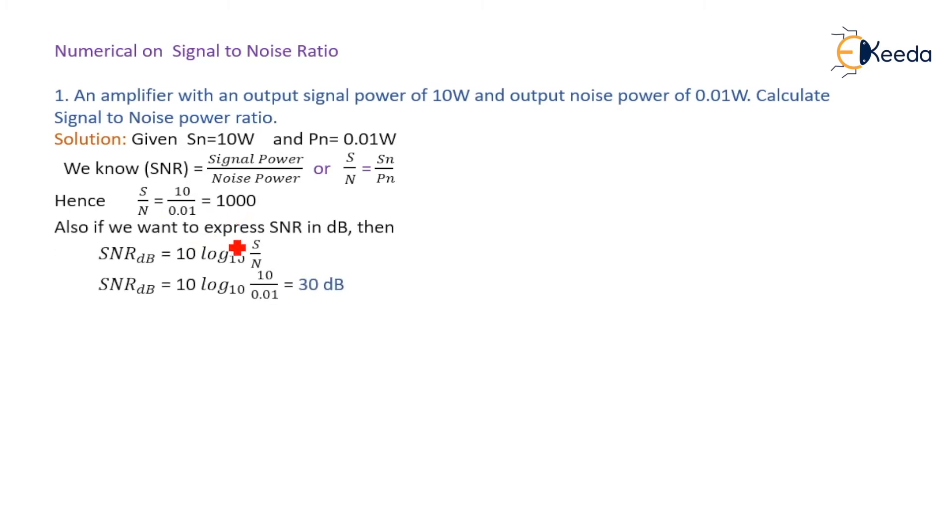Suppose if you want to express signal to noise ratio in decibels, then signal to noise ratio in decibels equal to 10 log to the base 10 of S by N. So SNR in dB equal to 10 log to the base 10 of 10 divided by 0.01 equal to 30 dB.